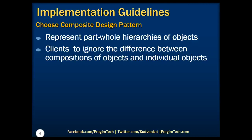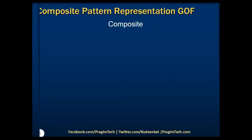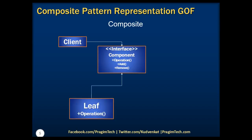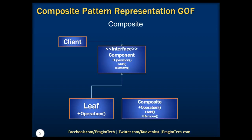Let's now take a look at the representation diagram of composite design pattern as per the Gang of 4 definition. Clients use the component interface to interact with objects in the composite structure. Component is the abstraction for all components including composite ones. Component declares the interface for objects in the composition. The leaf represents leaf objects in the composition. Leaf implements all the component methods. Composite components have children, which could be composite children or leafs.